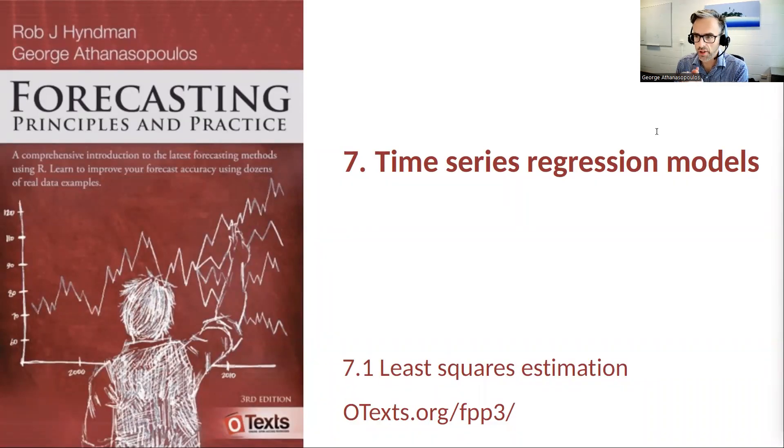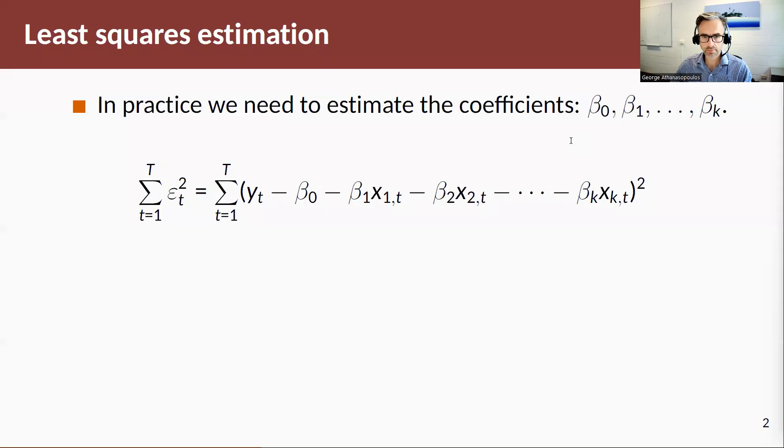Now having specified and thought about a model, we need to estimate it. The way we're going to estimate it in this chapter will be to use least squares estimation. We want to estimate the beta coefficients, and the principle of least squares says that we're going to take our errors, square them, sum them up, and minimize them.